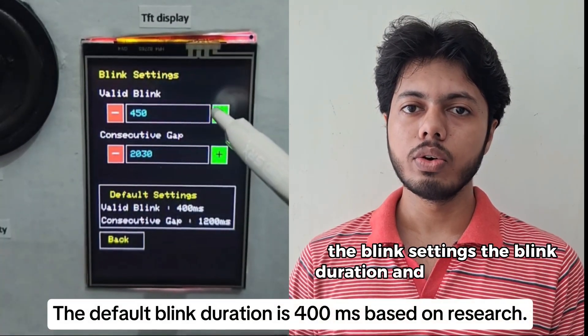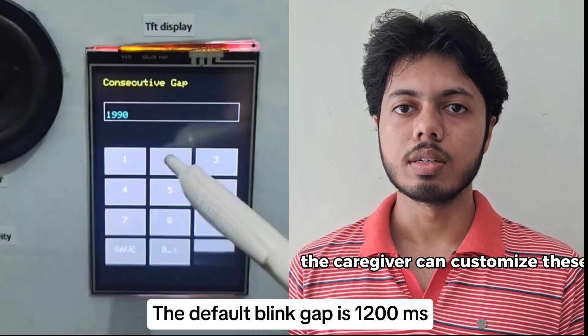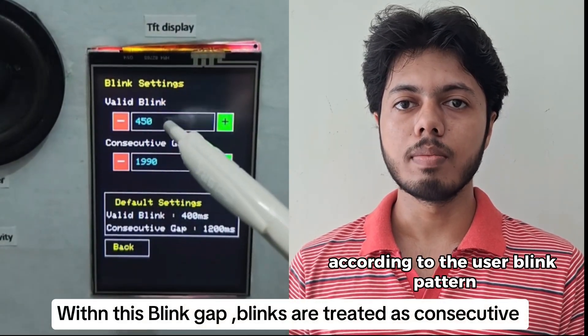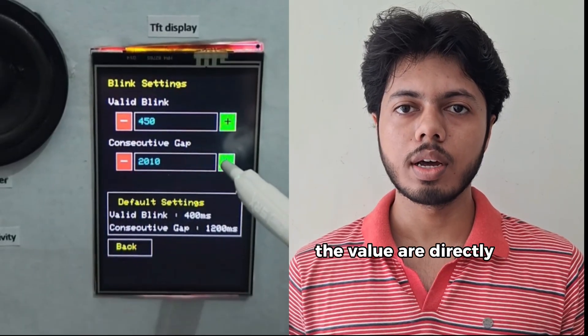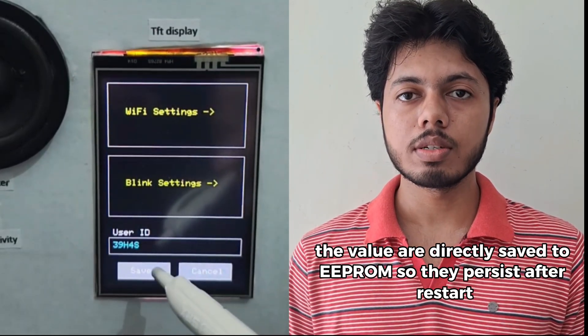In blink settings, the blink duration and blink gap can be adjusted. The caregiver can customize these blink settings according to the user's blink pattern. Whenever the settings are changed, the values are directly saved to EEPROM, so they persist after restart.